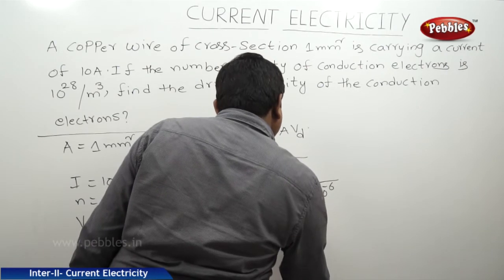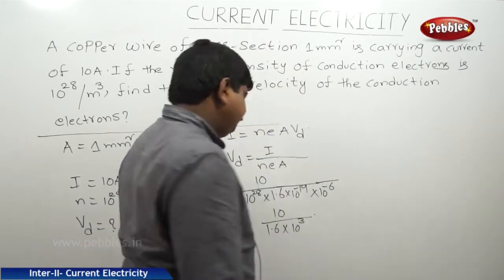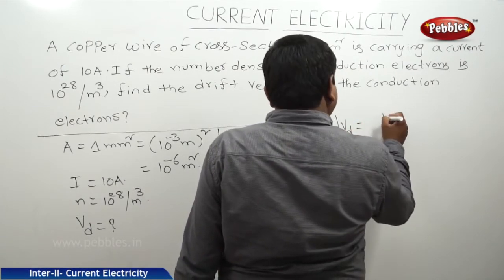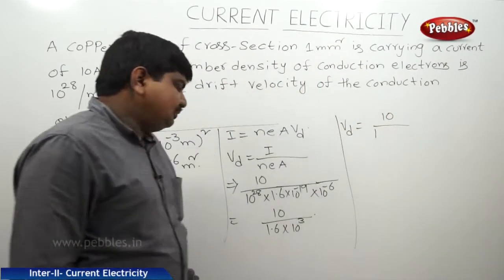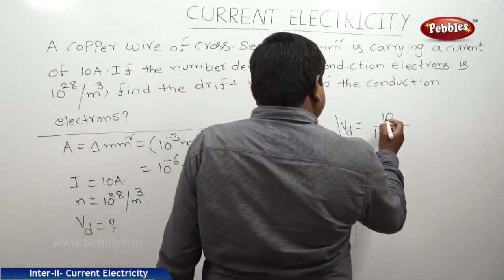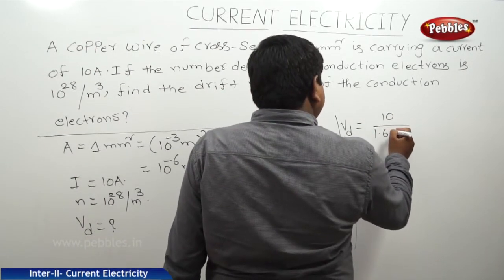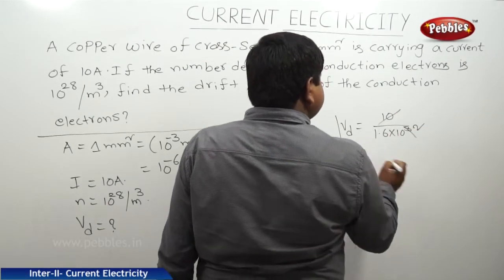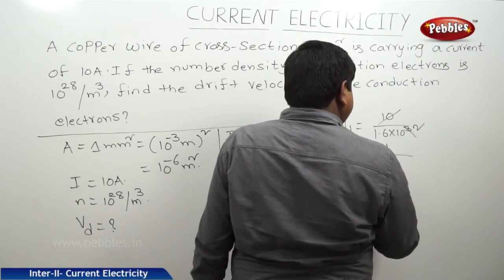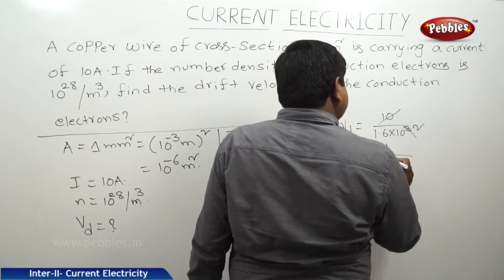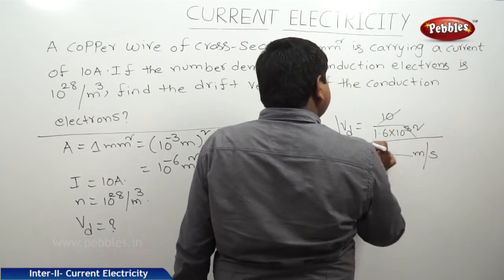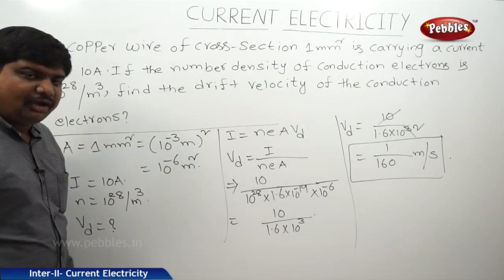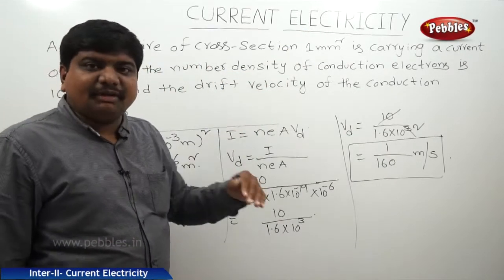The denominator is 1.6 into 10 cubed. So Vd equals 10 divided by 1.6 into 10 cubed, which simplifies to 1 by 160 meters per second. This is the drift velocity of the electrons acquired when passing through a conductor of these dimensions.